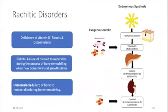Deficiency of vitamin D can cause rickets and osteomalacia. Rickets is the failure of osteoids to mineralize during bone remodeling when new bone forms at the growth plates, whereas osteomalacia is the failure of bone to remineralize during bone remodeling.